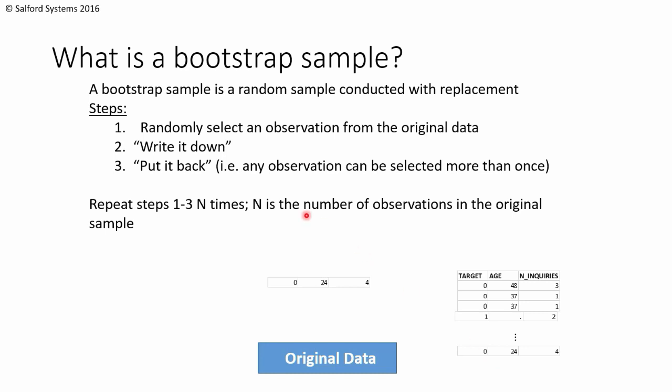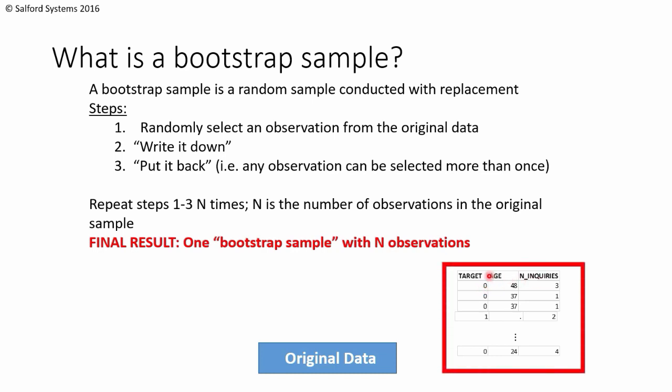We're stopping now that we have capital N number of observations in our bootstrap sample. Our final result is then going to be one single bootstrap sample with capital N observations, which is what we see exactly in this box. And that is a bootstrap sample.